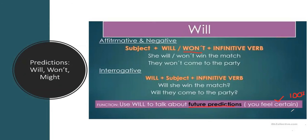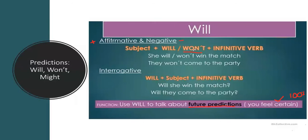This is something that is certain — sure that it is going to happen or not going to happen at all. So we have the affirmative and negative forms of will. We have our subject, then we add will or won't depending on whether your sentence is positive or negative, and then your verb in its infinitive or base form.